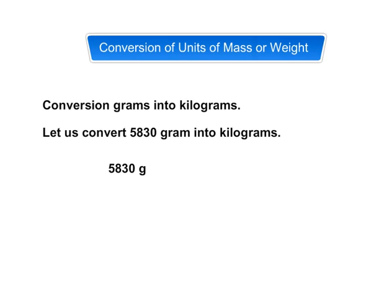To understand this, let us convert 5,830 grams into kilograms. Here, we will first separate 830 from 5,830. Then we will write kg with 5 and g with 830. Thus, we get 5 kilogram 830 grams.